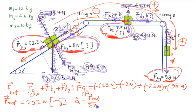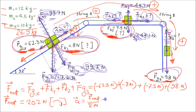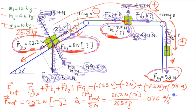Using Newton's second law, acceleration equals f_net divided by total mass. The total mass of the system is m1 plus m2 plus m3: 12 kilograms plus 4.5 kilograms plus 10 kilograms equals 26.5 kilograms. So acceleration equals 20.2 newtons divided by 26.5 kilograms, giving 0.76 meters per second squared. The direction of acceleration is the same as the net force — clockwise.